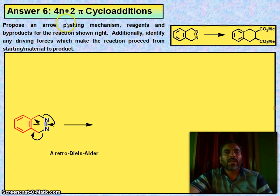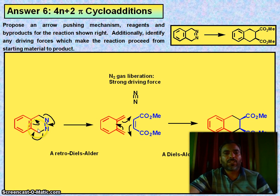Now propose an arrow pushing mechanism, reagents and byproducts for the reaction shown right. Additionally, identify any driving force which makes the reaction proceed from starting material to products like this. How is it formed? So just start from here: a retro Diels-Alder. CO2 gas liberated, a strong driving force.